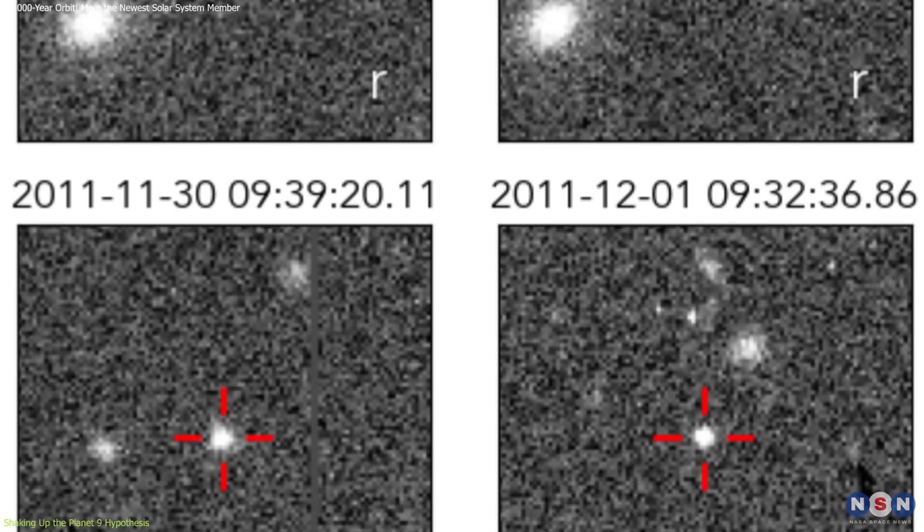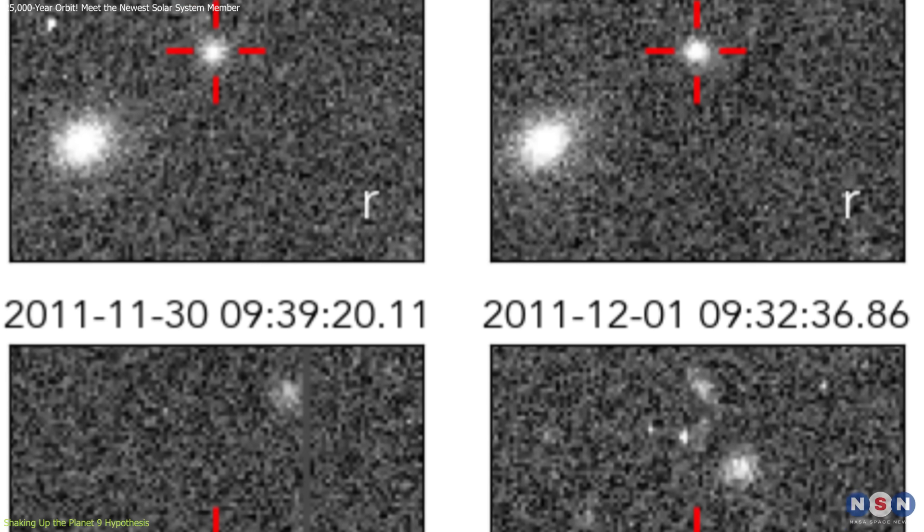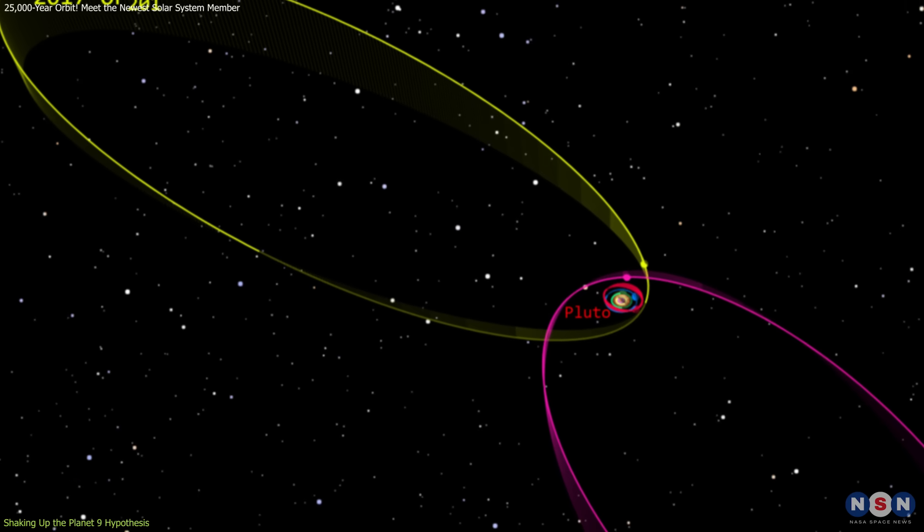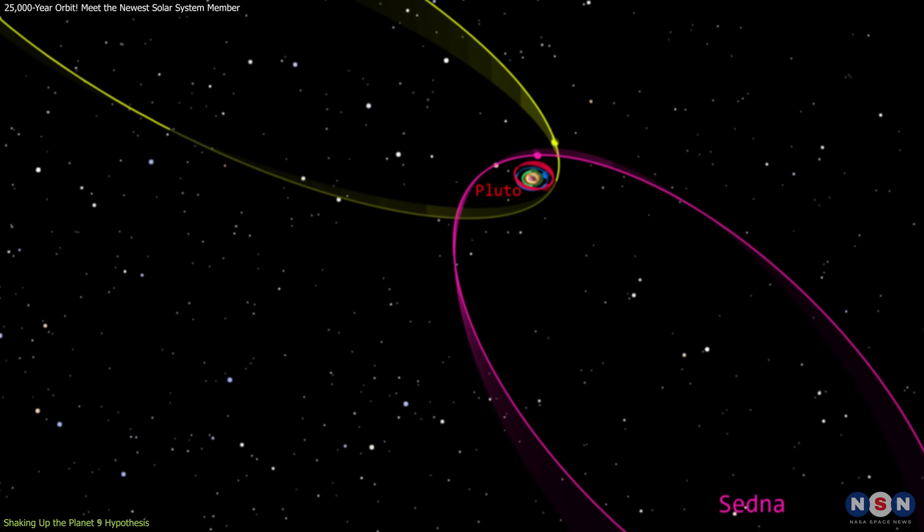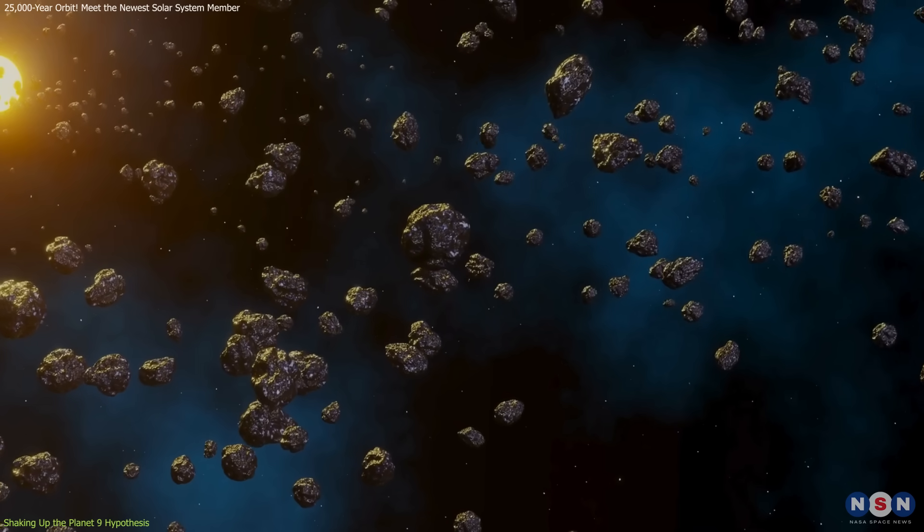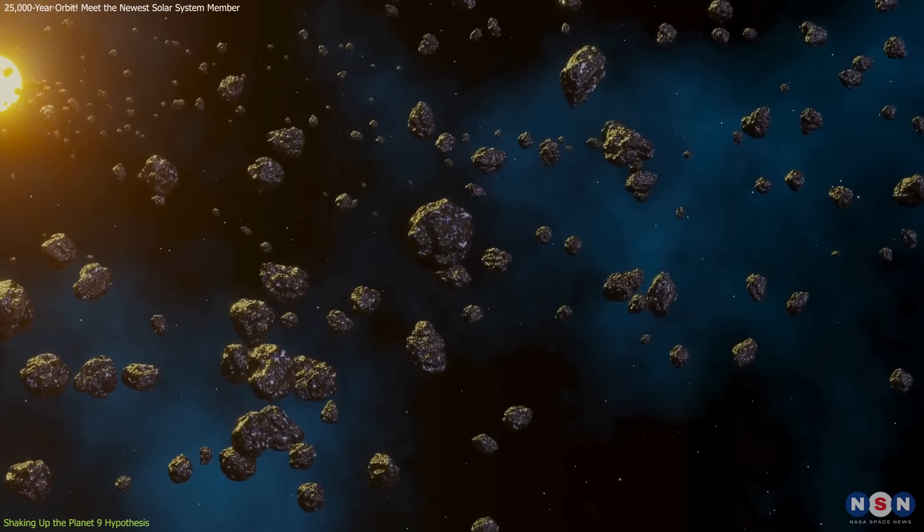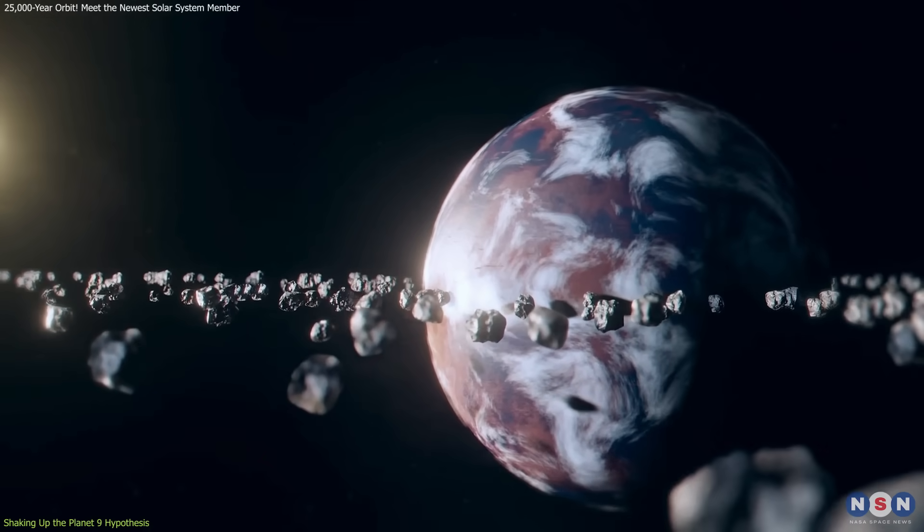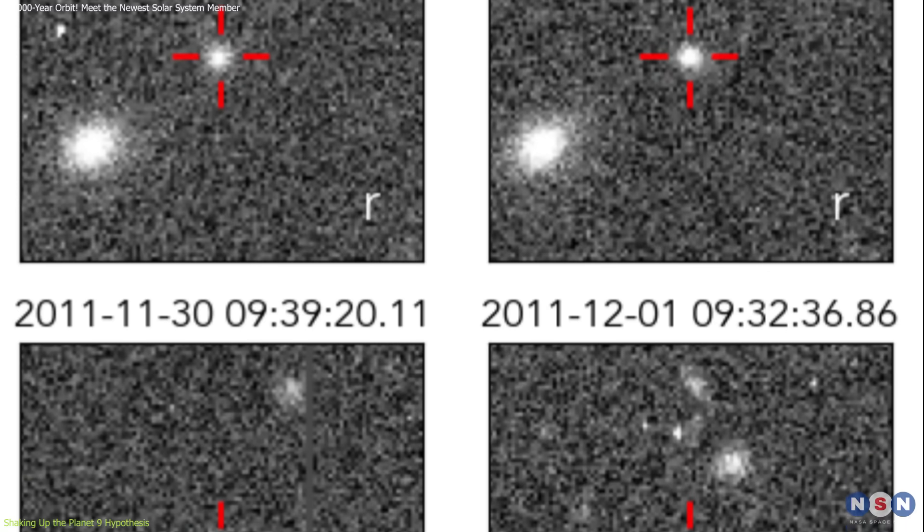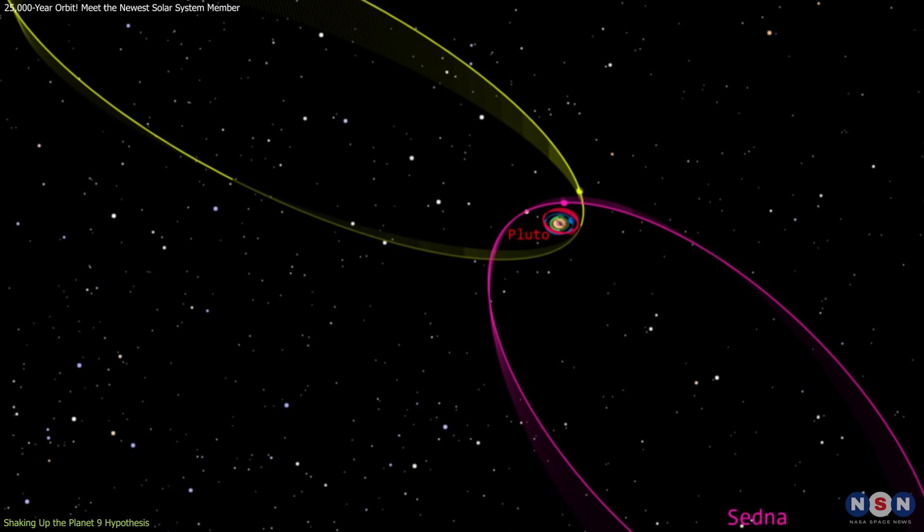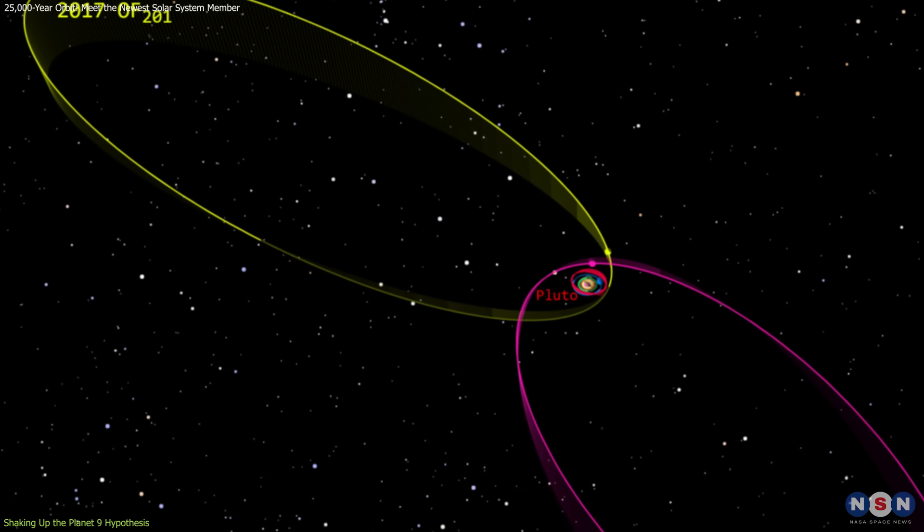But 2017 OF-201 doesn't conform to this trend. Its orbital alignment is significantly different from those of the TNOs that support the Planet 9 theory. The longitudes of perihelion, the point in their orbits where they come closest to the sun, are expected to cluster if a massive planet is shepherding them into formation. Instead, this TNO breaks this pattern entirely. Its orbit appears to be misaligned, scattered rather than grouped with others. This raises a critical question: Could the clustering observed so far simply be the result of observational bias?